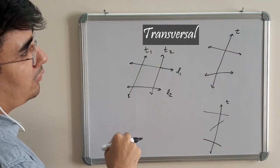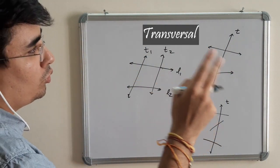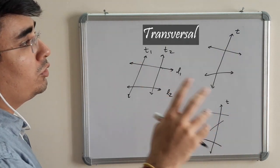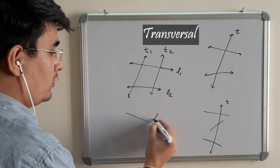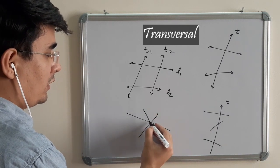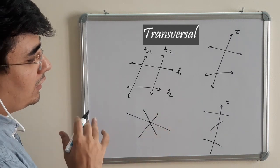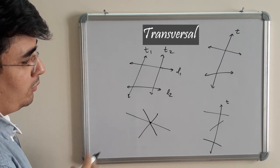But this particular definition is important. The transversal is that line which passes through two or more lines from distinct points. Distinct points. Why is it important? Suppose there are three lines passing from the single point.